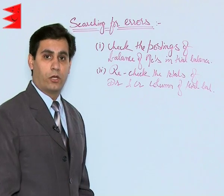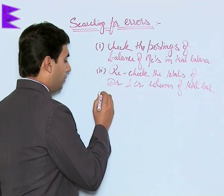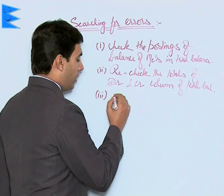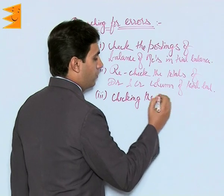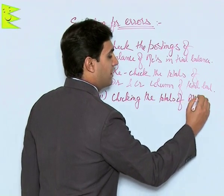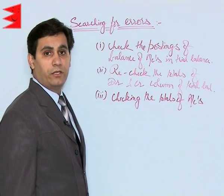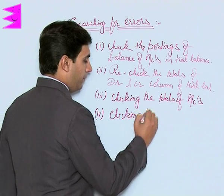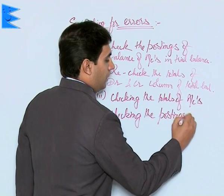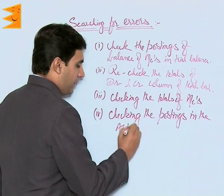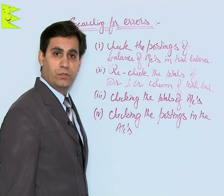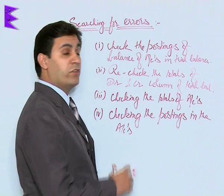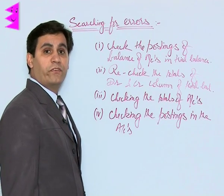If you are still not able to locate the error, a further series of steps must be followed. This includes checking the totals of individual accounts — whether their balances have been calculated correctly — and then checking the postings in those accounts, just to make sure that every journal entry has been posted correctly and the amount has been recorded correctly.